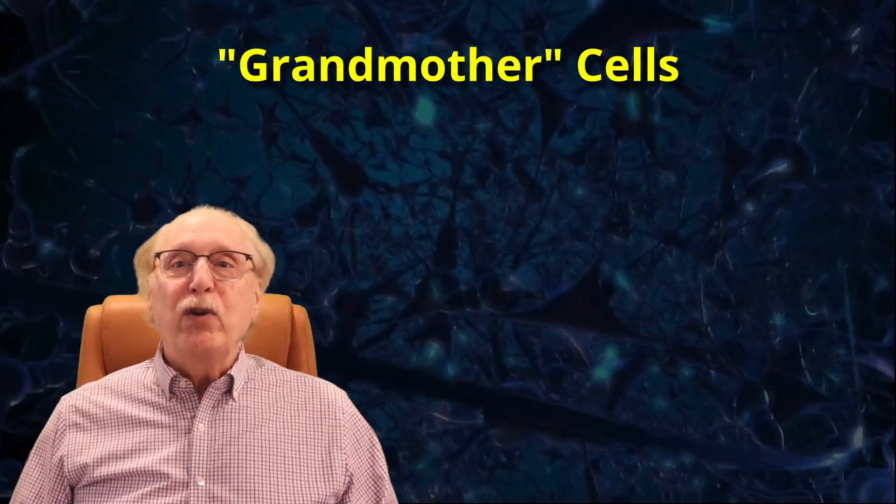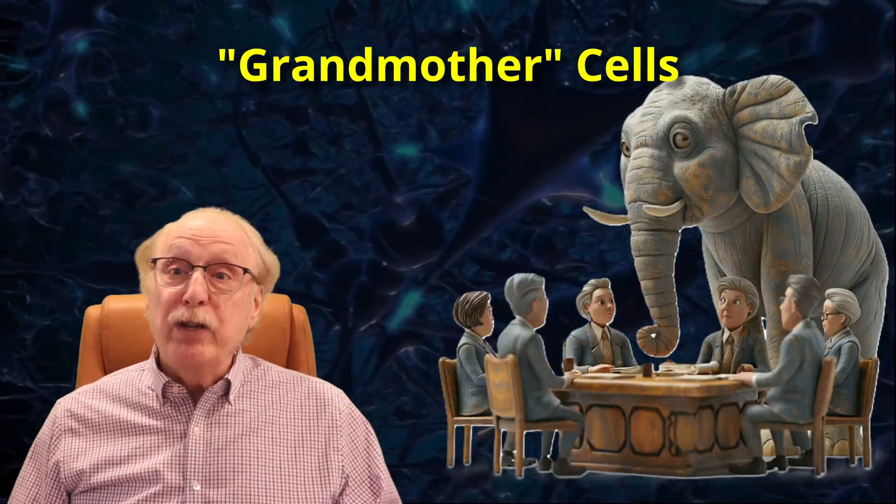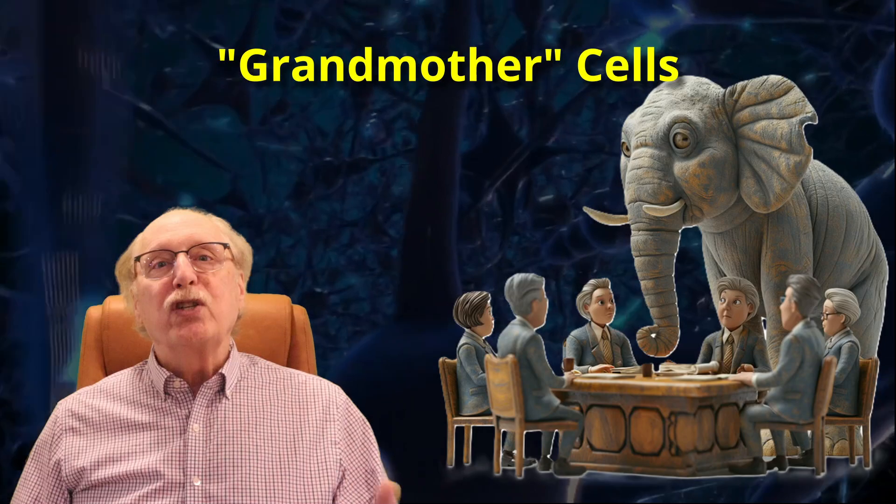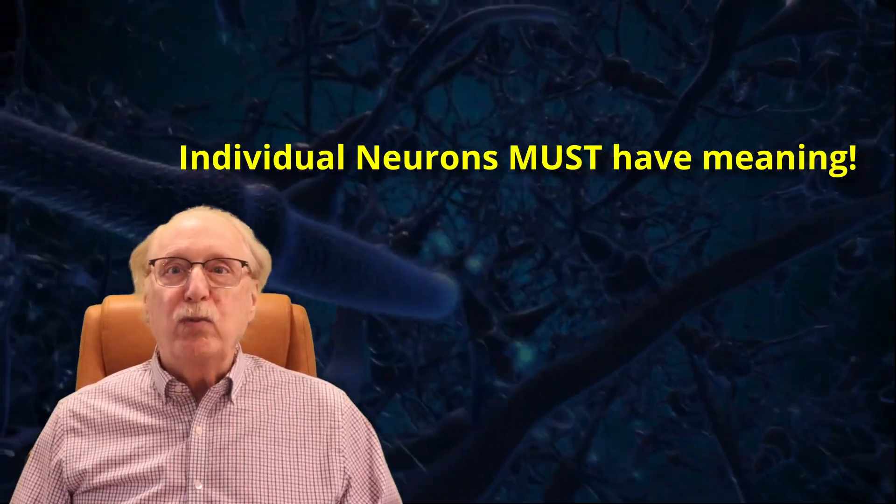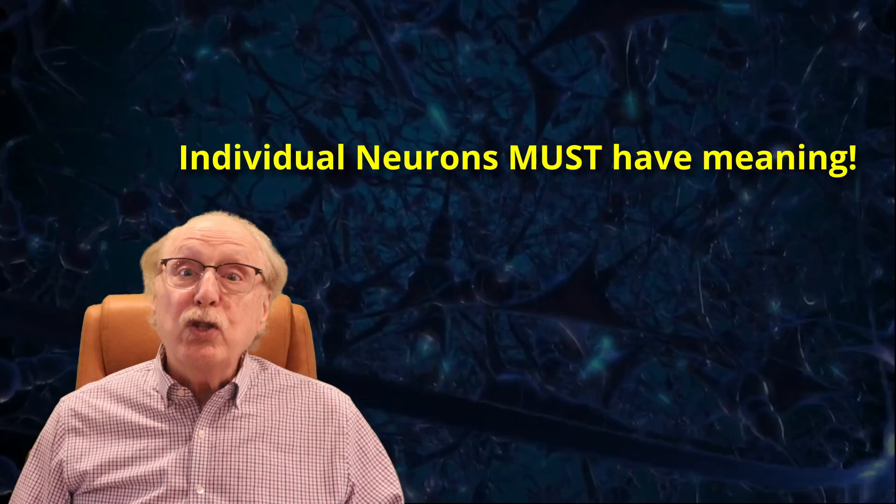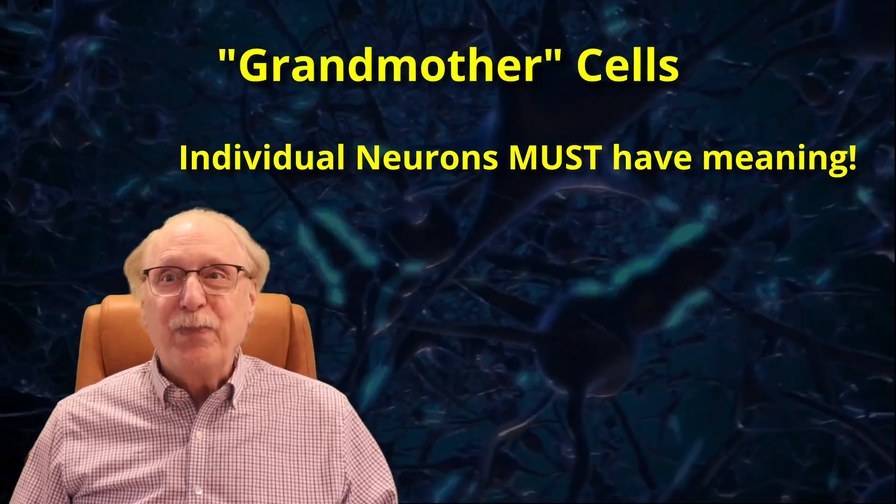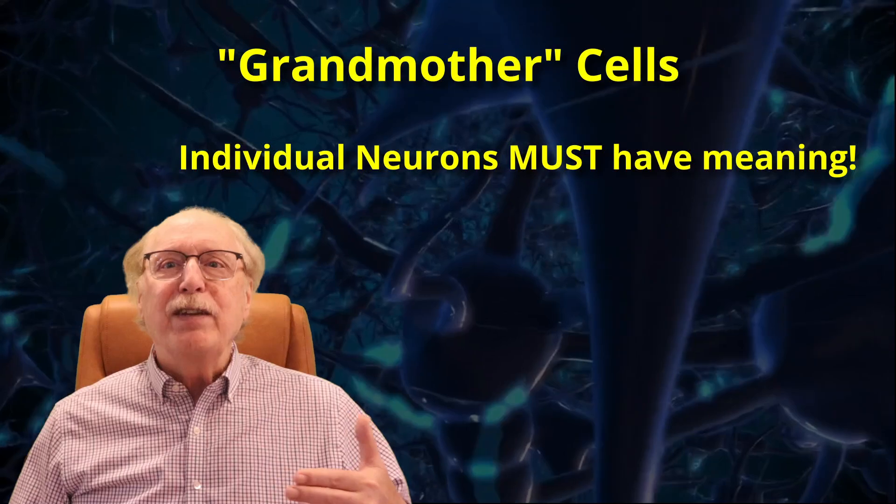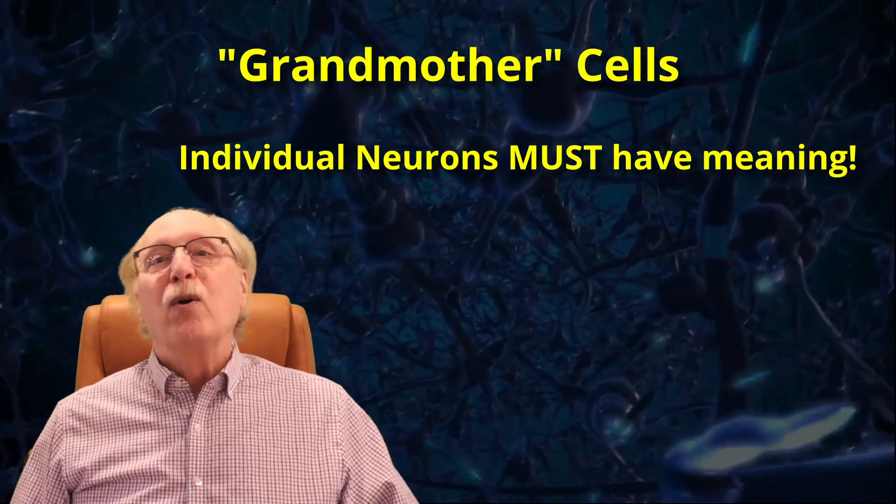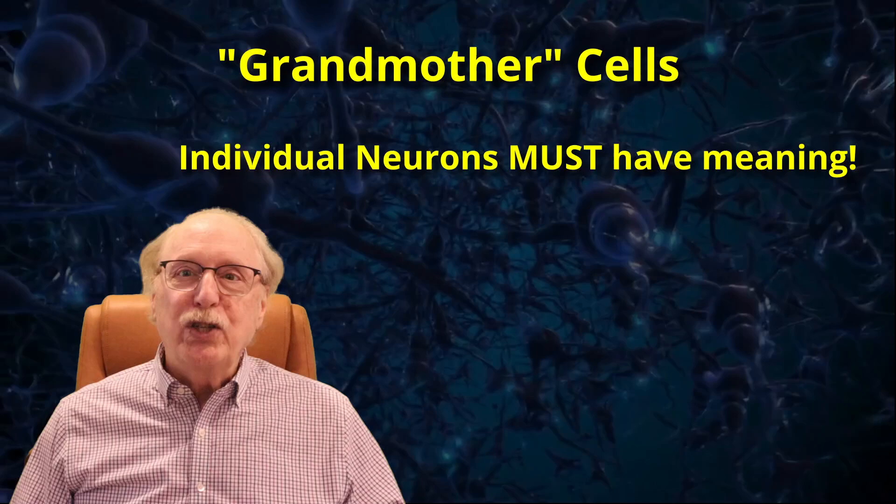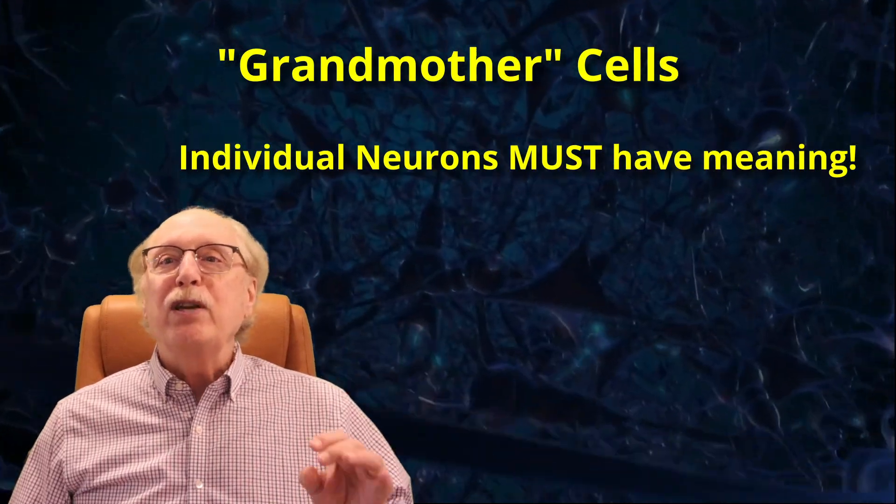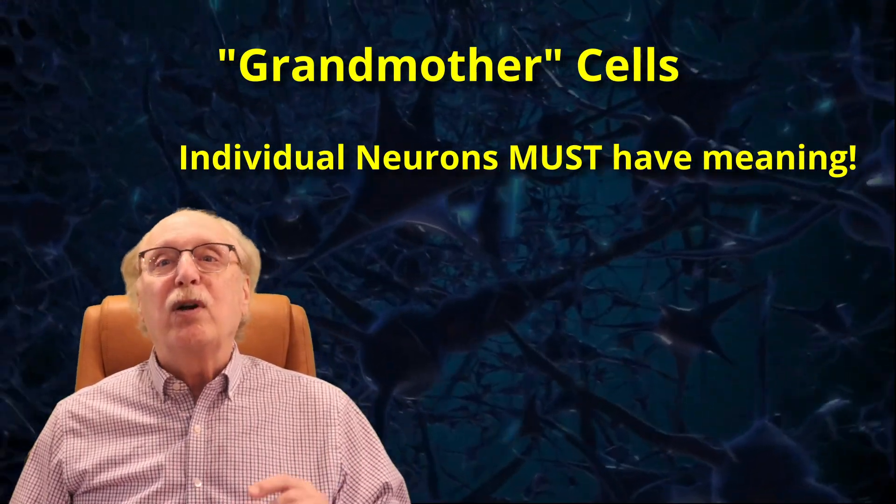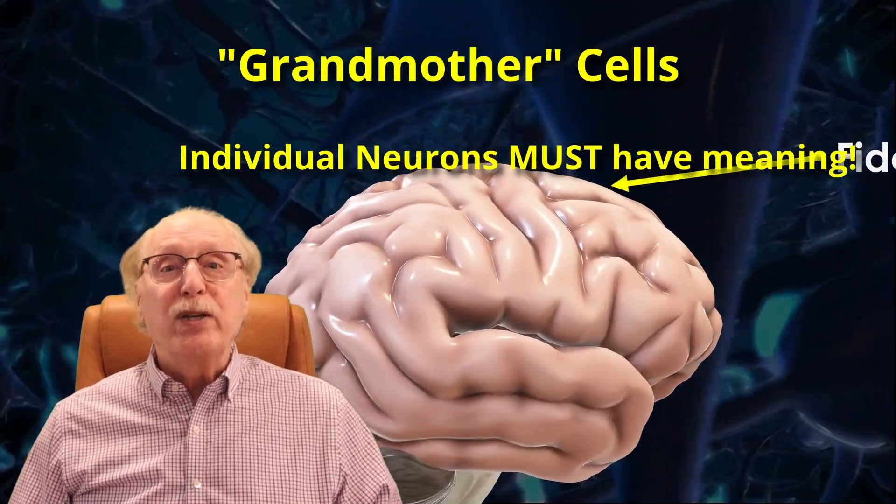Before I let you go, I'd like to address one elephant in the room, which I've heard as an objection to this entire approach to knowledge representation. The idea that your brain might contain individual neurons with specific meanings, which was first coined as grandmother cells. The idea is that you have individual neurons, which represent your grandmother or FIDO or dogs in general. These neurons would fire when you see your grandmother or FIDO, and perhaps if we stimulated these neurons, your memory of your grandmother would be brought to mind.